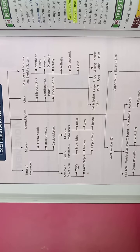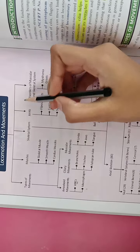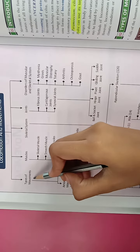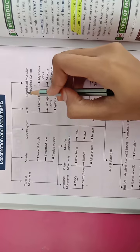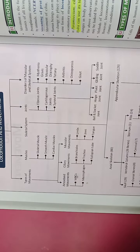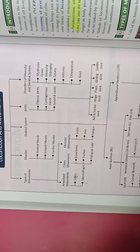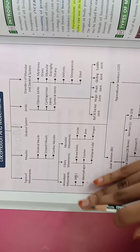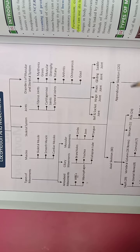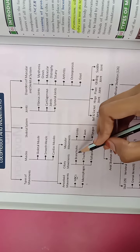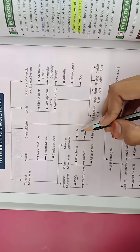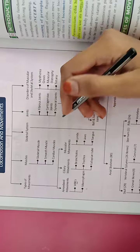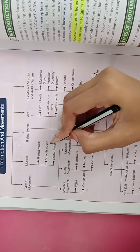Hello everyone. In the last lecture we did locomotion and movement. We covered the whole tree diagram with 5 important points: types of movements, muscles, skeletal system, joints, and disorders of muscular and skeletal system. Types of movements included amoeboid movements — WBC and macrophages; ciliary movements — bronchioles, trachea, fallopian tube; and muscular movements — limbs and jaws. We studied 15 questions. Today we will do muscles: smooth muscles, cardiac muscles.